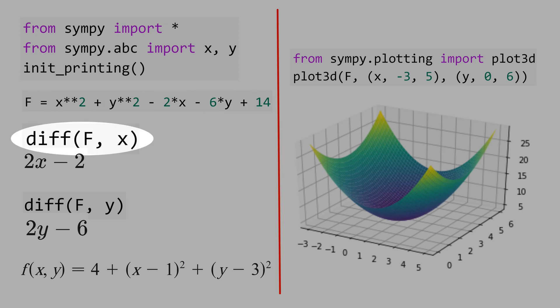If you take the partial derivative with respect to x, we get 2x minus 2. And if you take the partial derivative with respect to y, we get 2y minus 6.